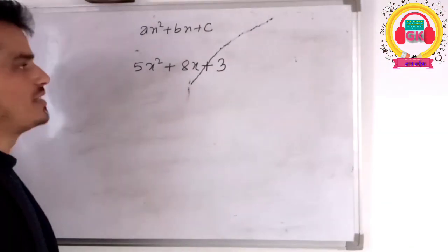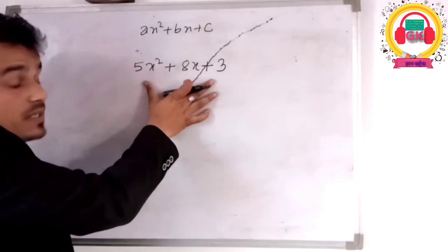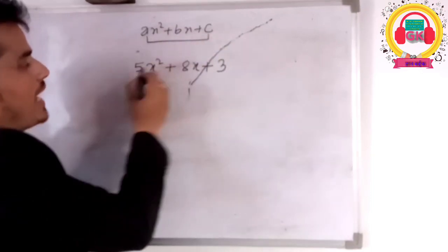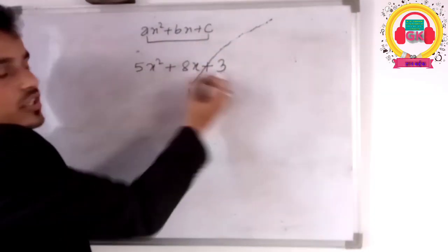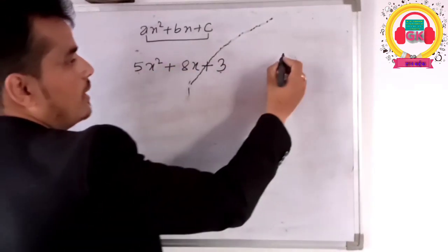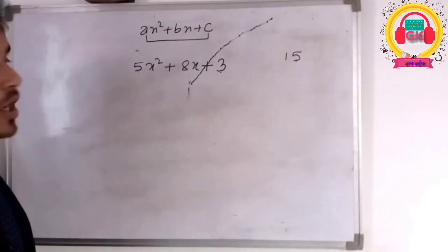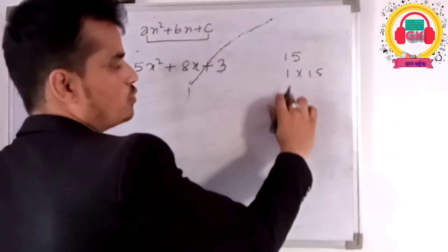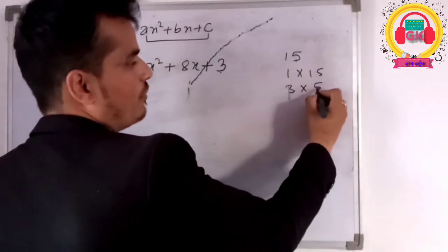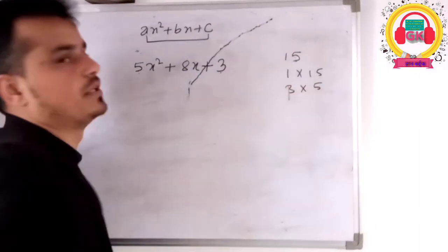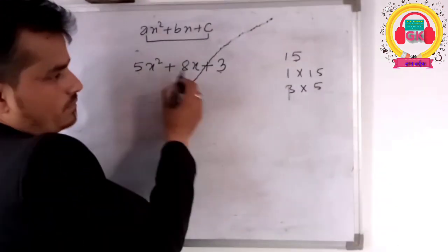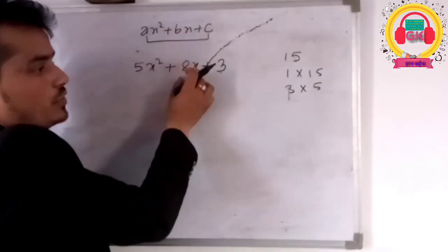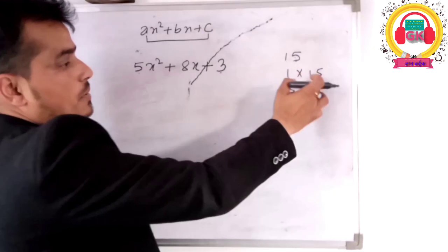Now we are going to do a trinomial algebraic expression: ax squared plus bx plus c. To factorize, we multiply a by c. For example, if a equals 5 and c equals 3, we multiply 5 by 3 to get 15. Then we find two numbers that multiply to 15 and add to b.